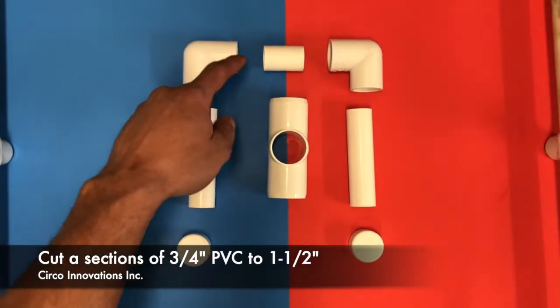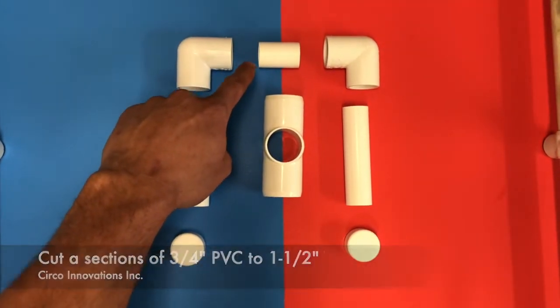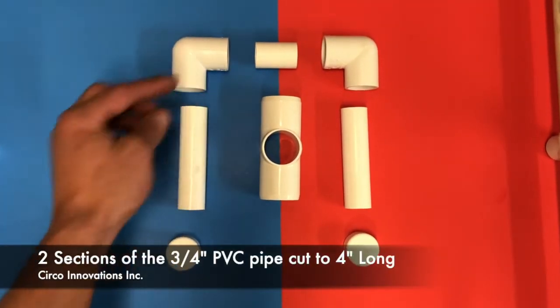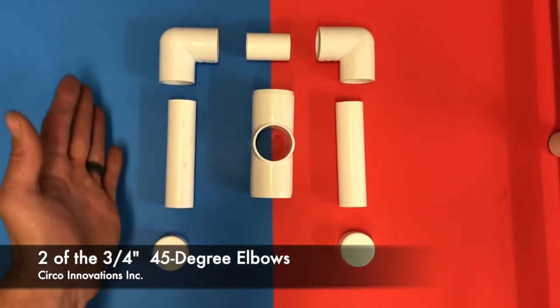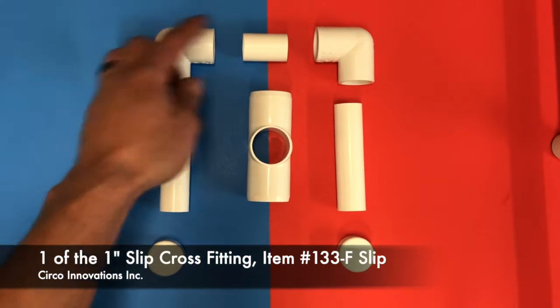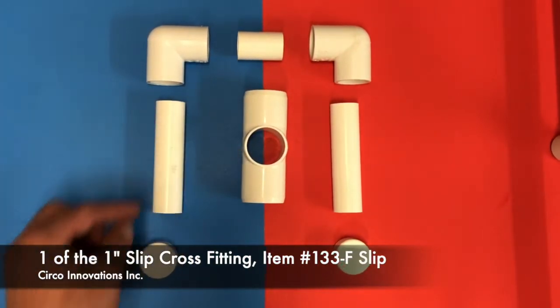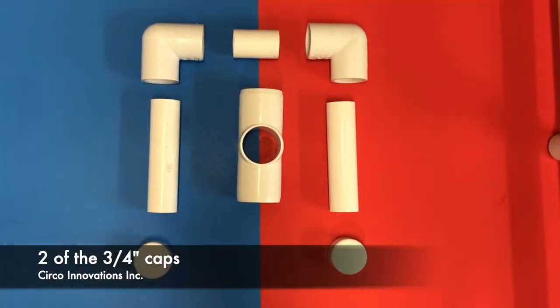On the top here we have one section cut to an inch and a half. That's three-quarter inch PVC pipe. We have two sections of the three-quarter inch PVC pipe cut to four inches. They can be any length you'd like. We have two L's that are three-quarter. We have one slip cross and one inch and then two caps.